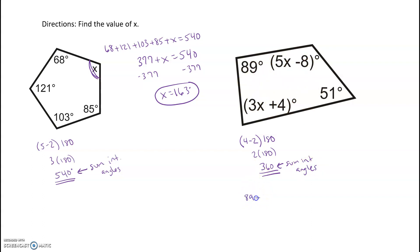So we're going to set it up: 89 plus 5x minus 8 plus 51 plus 3x plus 4. All four of my angles should add up to equal 360 degrees because it's a quadrilateral. Lots of like terms here, so 5x's and 3x's, you've got 8x. Then we have 89 minus 8 plus 51 plus 4, and we have 136.